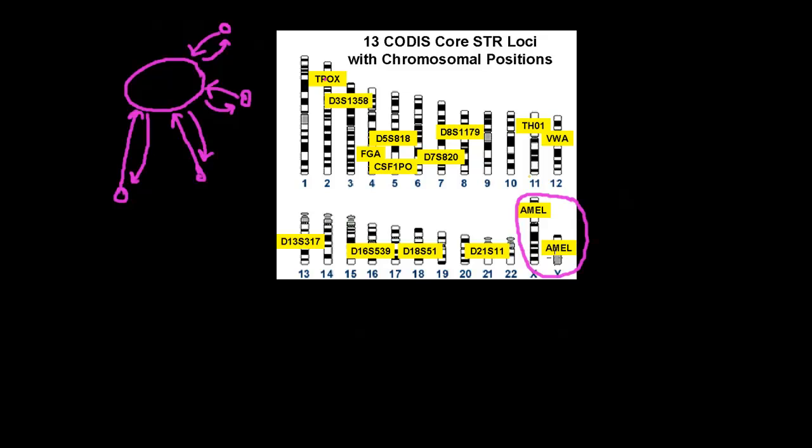One site for the protein amelogenin is analyzed because the X chromosome has a deletion in intron number one—it's six nucleotides shorter than its version in the Y chromosome. So whenever we have a male, we expect to have two bands. Whenever we have two X chromosomes, that means we will have only one band here.